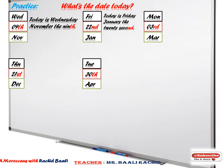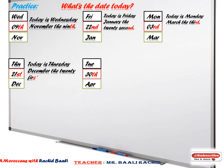Number three: 'Today is Monday, March the 3rd.' Number four: 'Today is Thursday, December the 21st.' And the last one: 'Today is Tuesday, April the 30th.' Okay, guys?